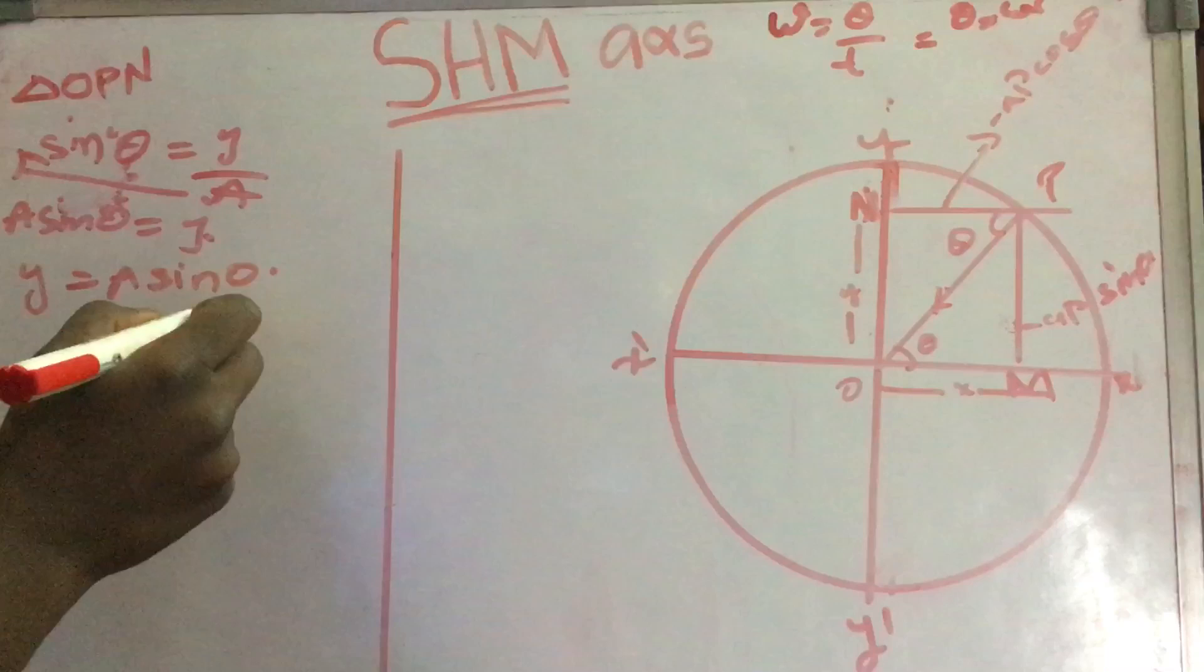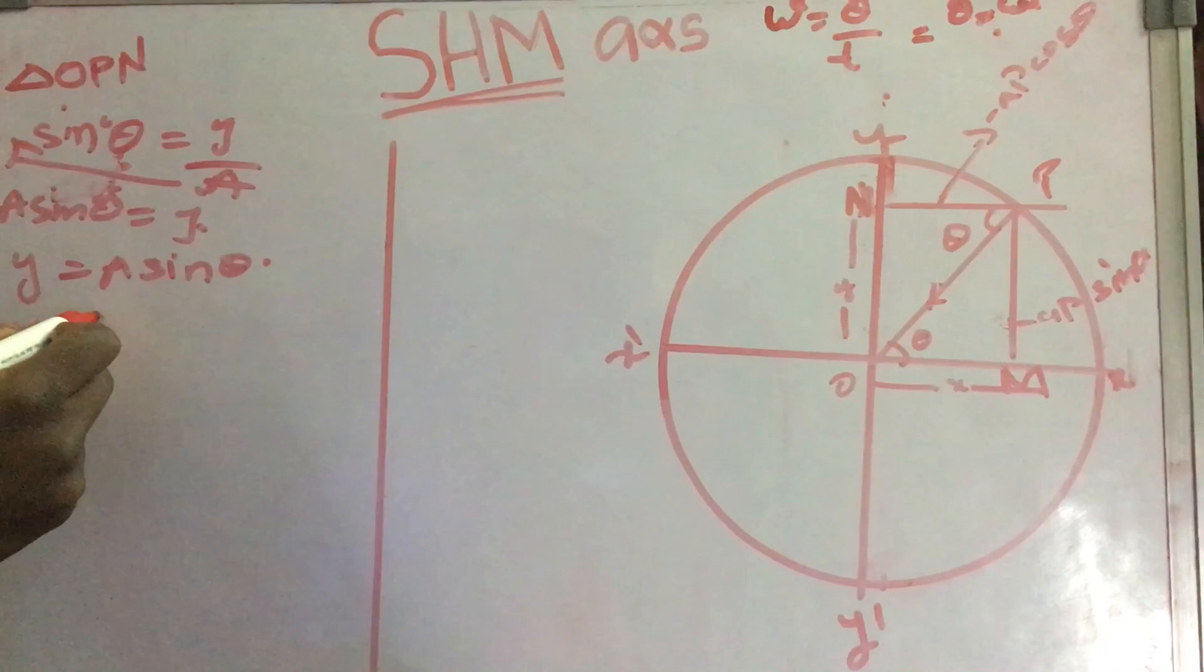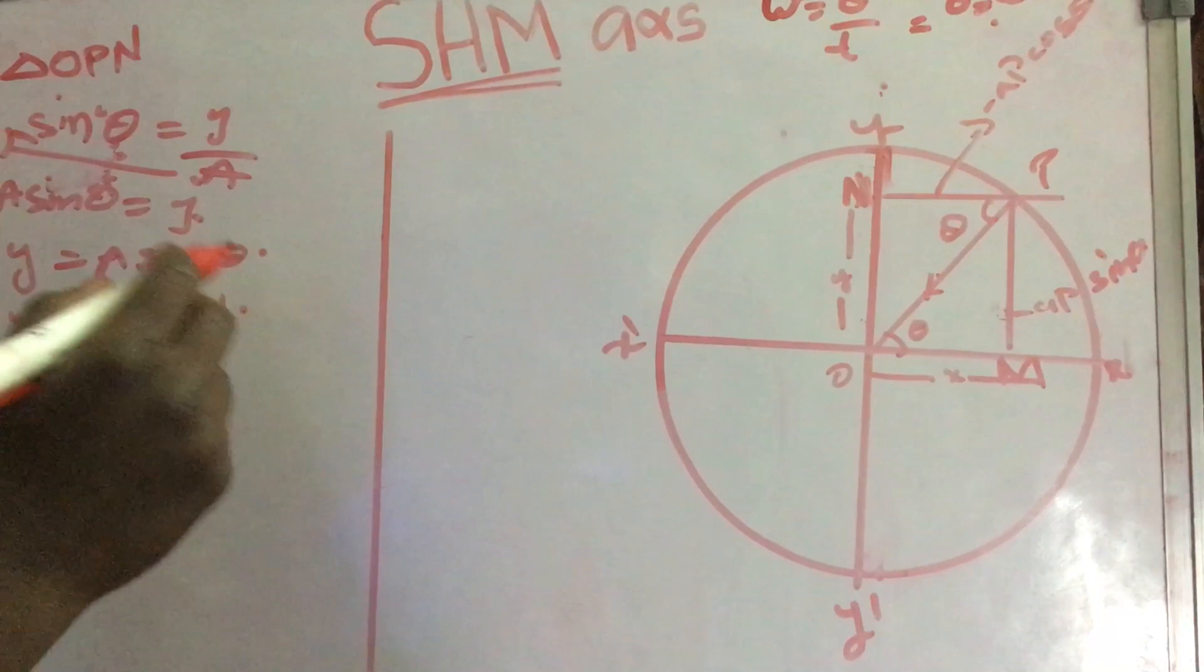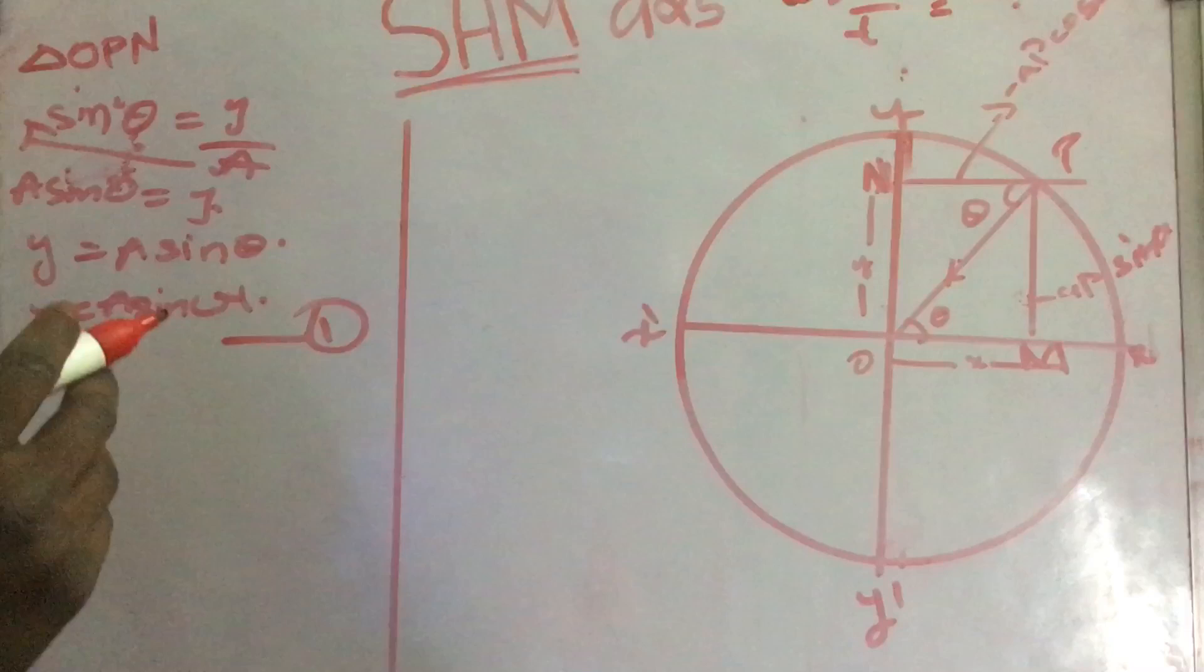Now I am going to substitute the value of theta. Theta is equal to omega t. Y is equal to A sin omega t. I have got equation number one. Second equation, now we are going to do.